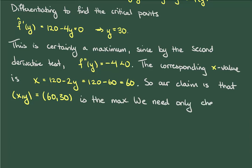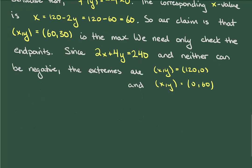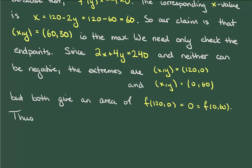All that's left to check is the endpoints. Looking at the constraint and using the fact that x and y can't be negative, we see that the two extremes for the sizes of x and y are (120,0) and (0,60). But of course, these can't be maxima because they both give an area of 0. Thus, throwing away the endpoints, we can conclude that the dimensions which maximize the area of the pasture occurs when x is equal to 60 and when y is equal to 30.